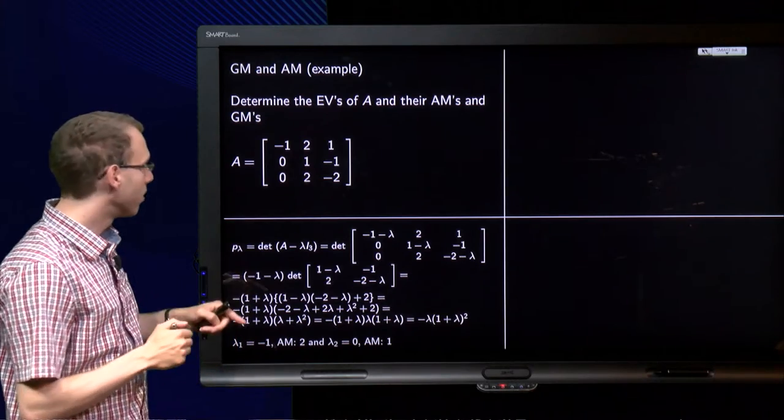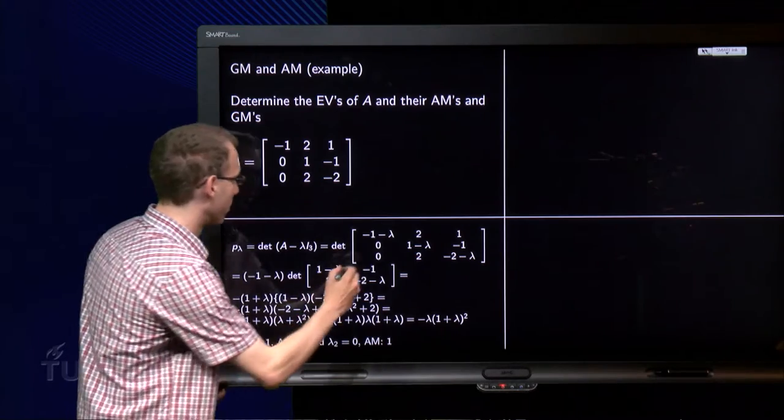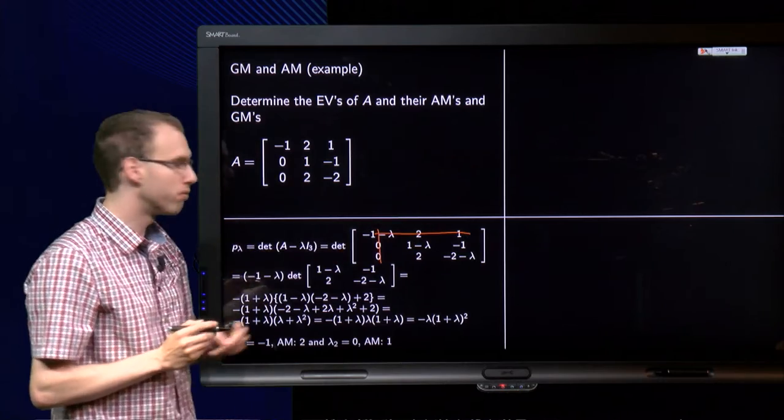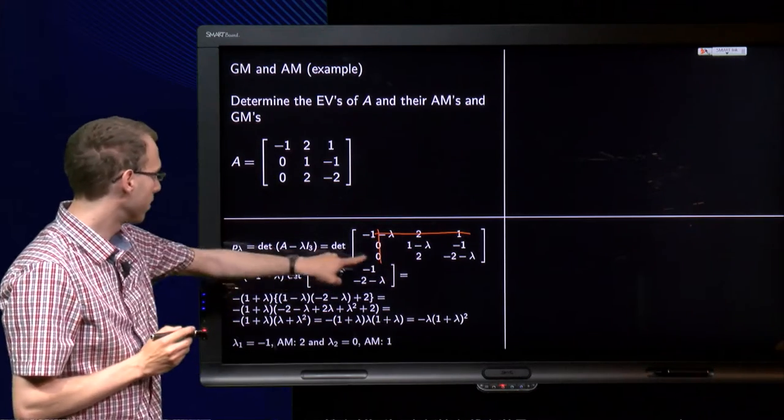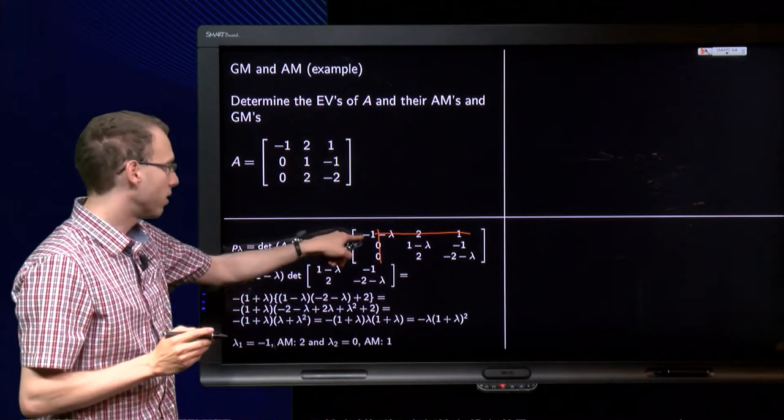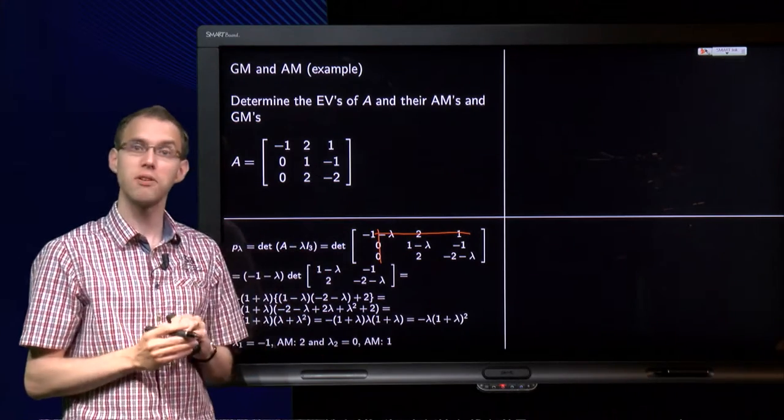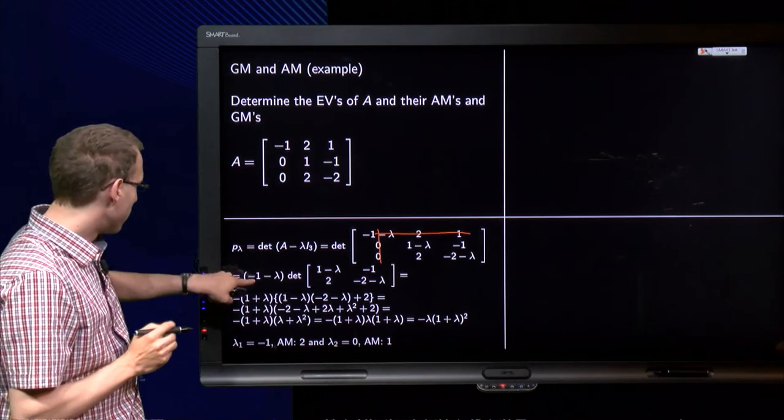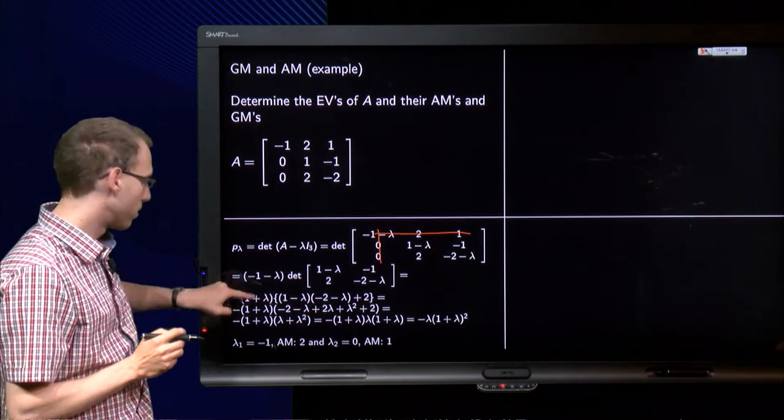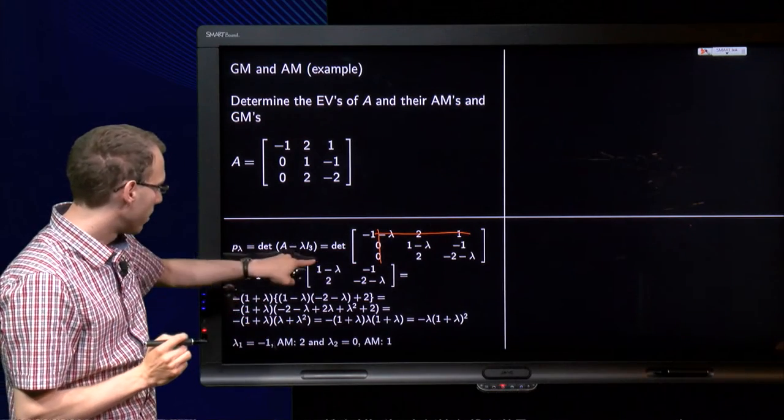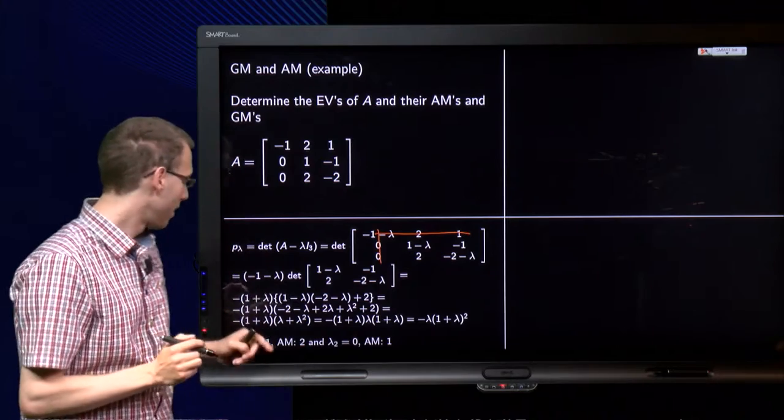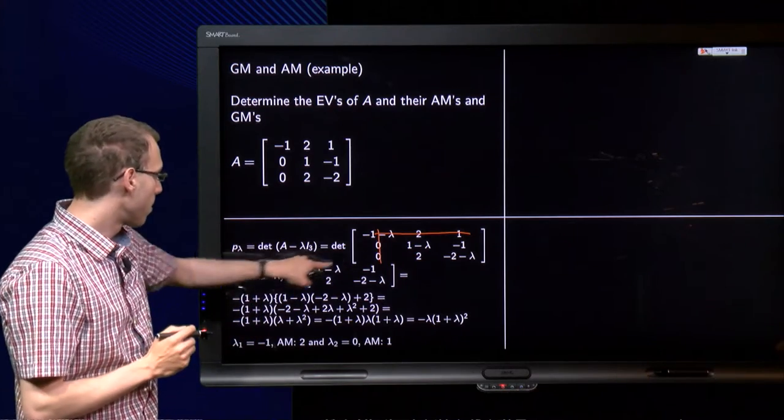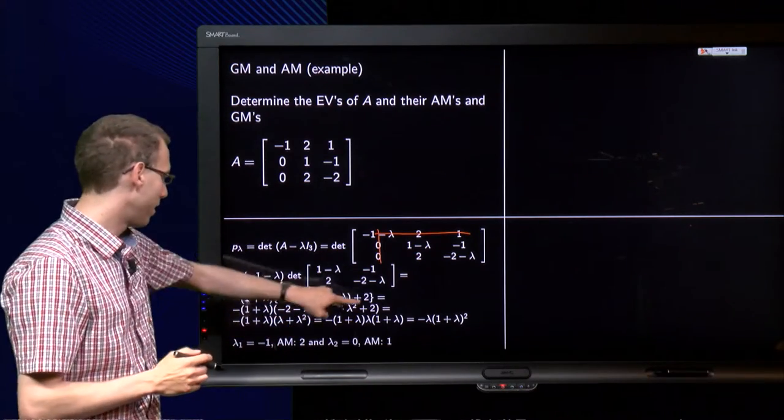So we expand along the first column, so we get minus lambda minus 1 times the determinant we get by raising the first row, first column. So this one over here, as you see here. Minus zero times something plus zero times something, so those cancel out. And then we have to compute this determinant over here. So we get minus 1 minus lambda, or minus between brackets 1 plus lambda, times 1 minus lambda times minus 2 minus lambda. And don't forget to put enough brackets here, in order to avoid mistakes. Minus minus 2, so plus 2. And then we are there.